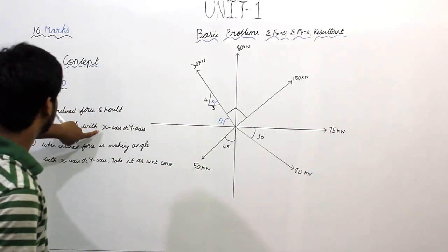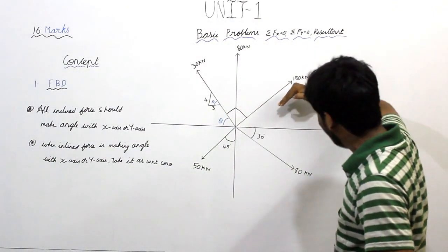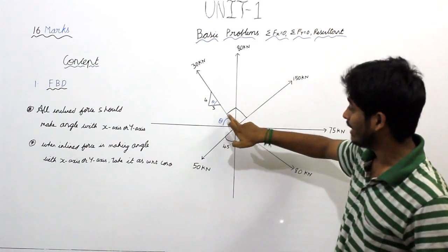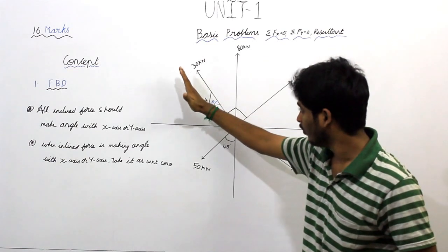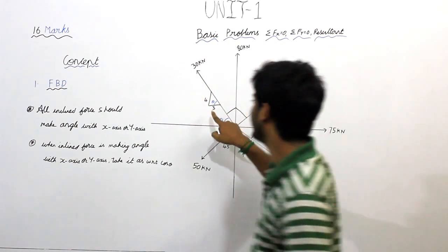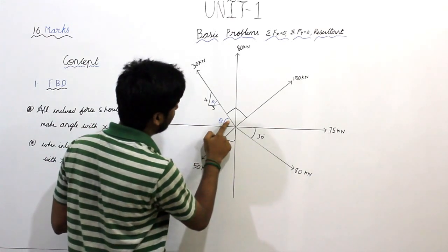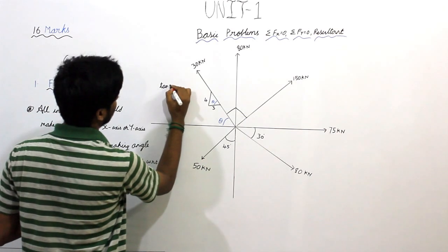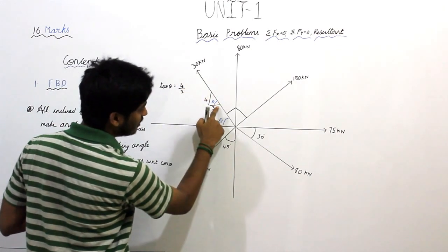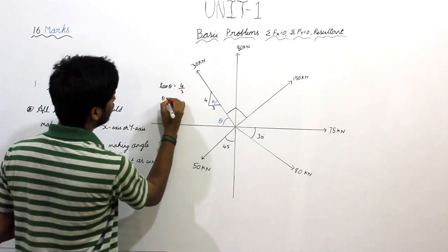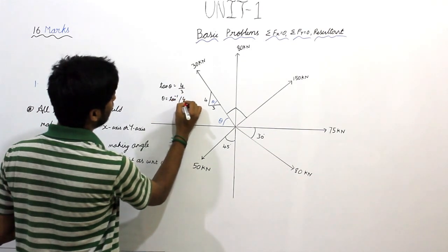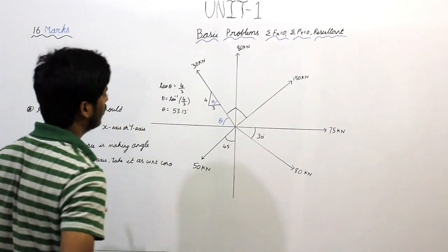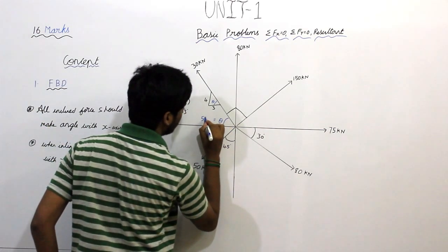First, it is an inclined force not making an angle with either the x-axis or y-axis, but it is making a 90-degree angle with the force. So first we have to find this angle. We find: tan theta = 4/3, which is opposite over adjacent. Therefore theta = tan inverse of 4/3, which gives theta equal to 53.13 degrees.